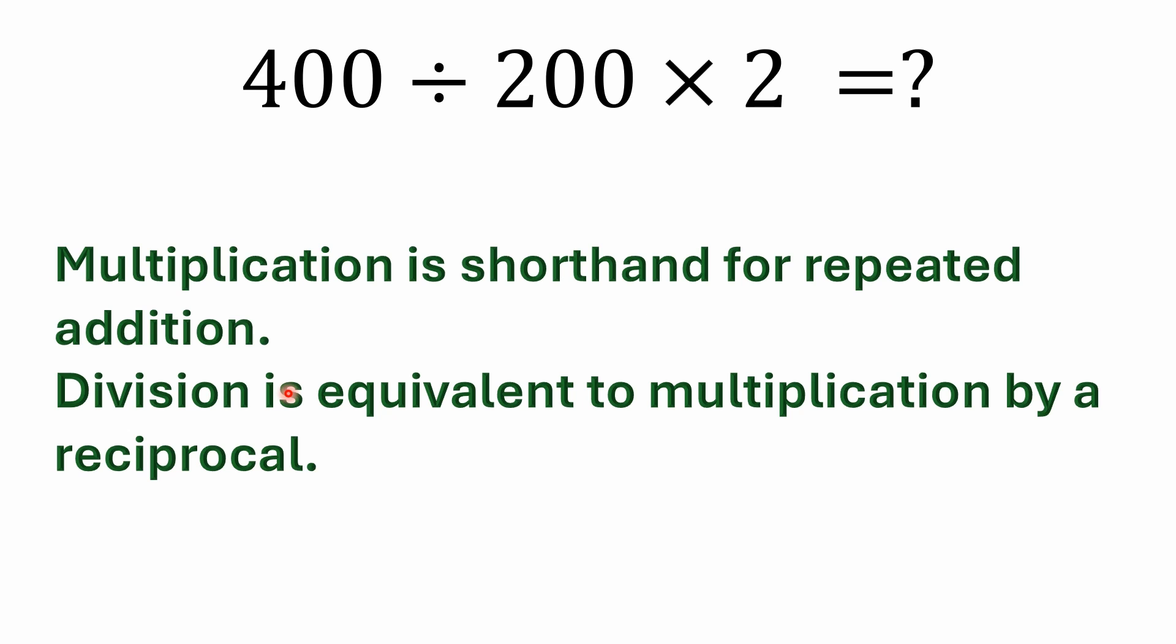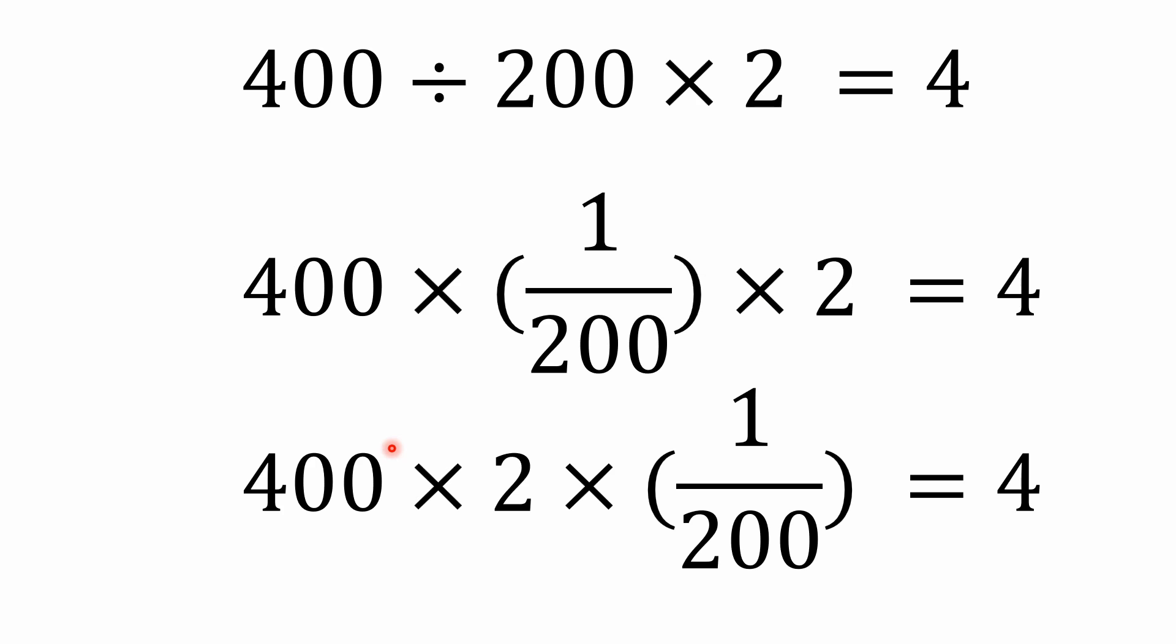And again, I've mentioned this before, but multiplication is just shorthand for repeated addition, and again, division is equivalent to multiplying by a reciprocal. Now you can look at this, you know, all of these answers you still get 4. Remember I mentioned that division is nothing more than multiplying by a reciprocal. So if I say 400 divided by 200, it's the same thing as saying 400 times 1 over 200. So I could write it this way, and maybe it becomes more obvious to people why the answer is 4 when you make it all multiplication. Because 400 times 1 over 200 is what? It's 2. 2 times 2 is 4.